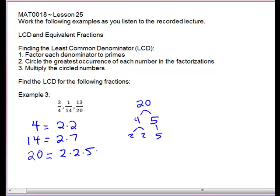And now we want to pick the greatest occurrence for each factor. So for our 2's, in the 4 and in the 20, they're equal. Just pick either one. They're the same. For the 5's, only 1. And for the 7's, only 1.